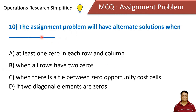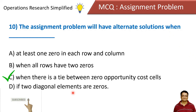The assignment problem will have an alternate solution when: at least one zero exists in each row and column, all rows have two zeros, there is a tie between zero opportunity cost cells, or two diagonal elements are zeros. The answer is that the assignment problem will have an alternate solution when there is a tie between zero opportunity cost cells — when there are two zeros to which I can make an allocation and I randomly select one, selecting the other would also give an optimal solution, which is the alternate solution.